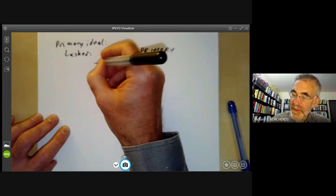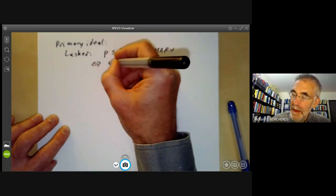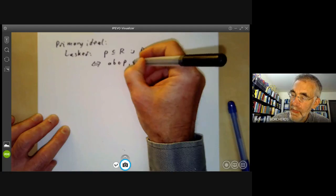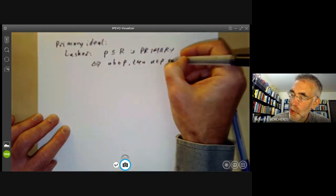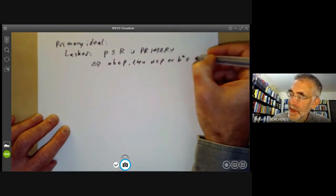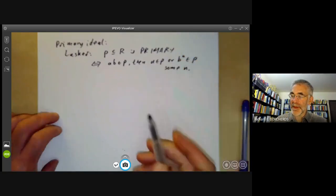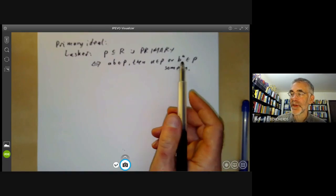This means that if a·b is in p, then a is in p or b^n is in p for some n. So it's a little bit weaker than the condition that the ideal is prime.